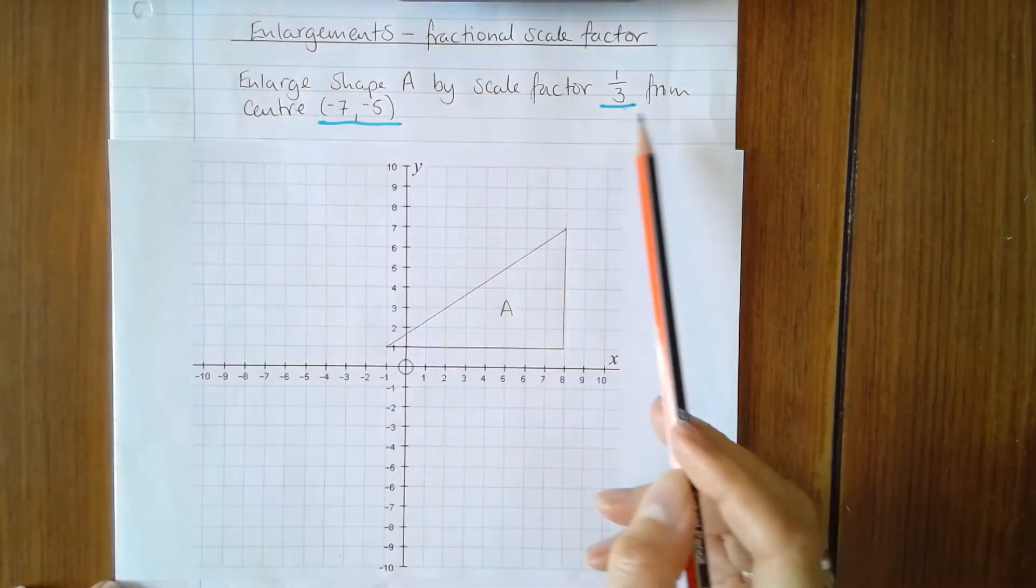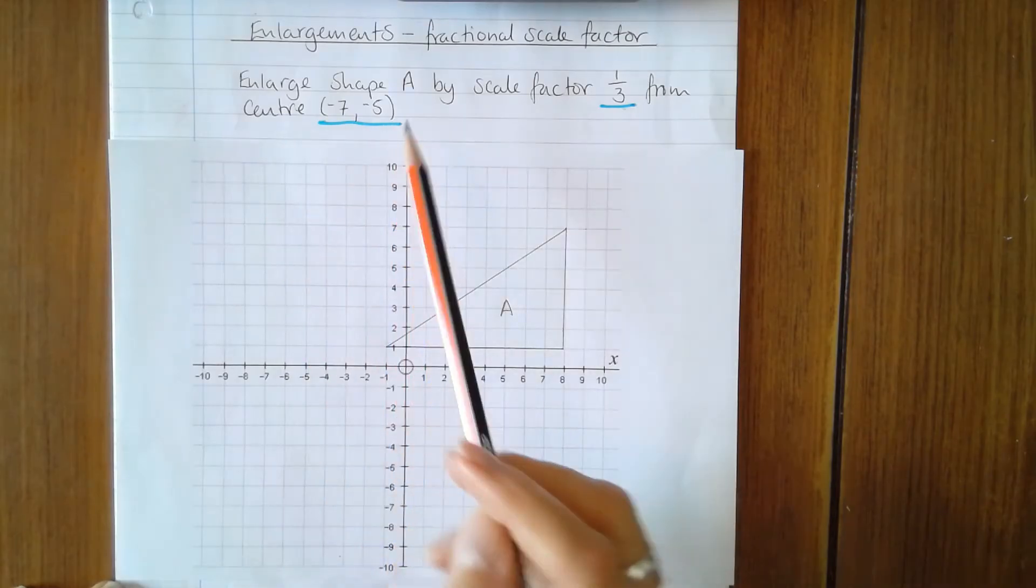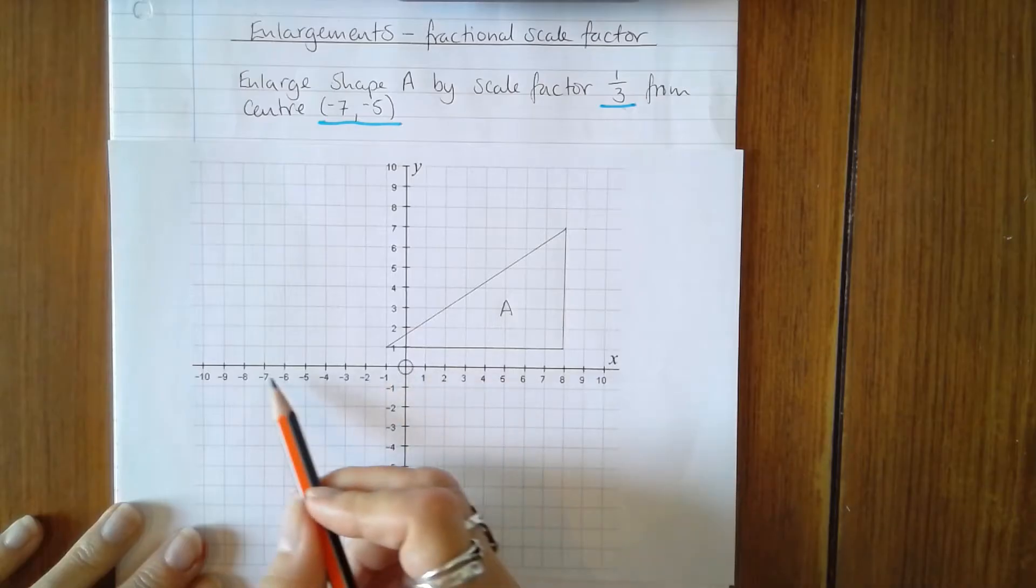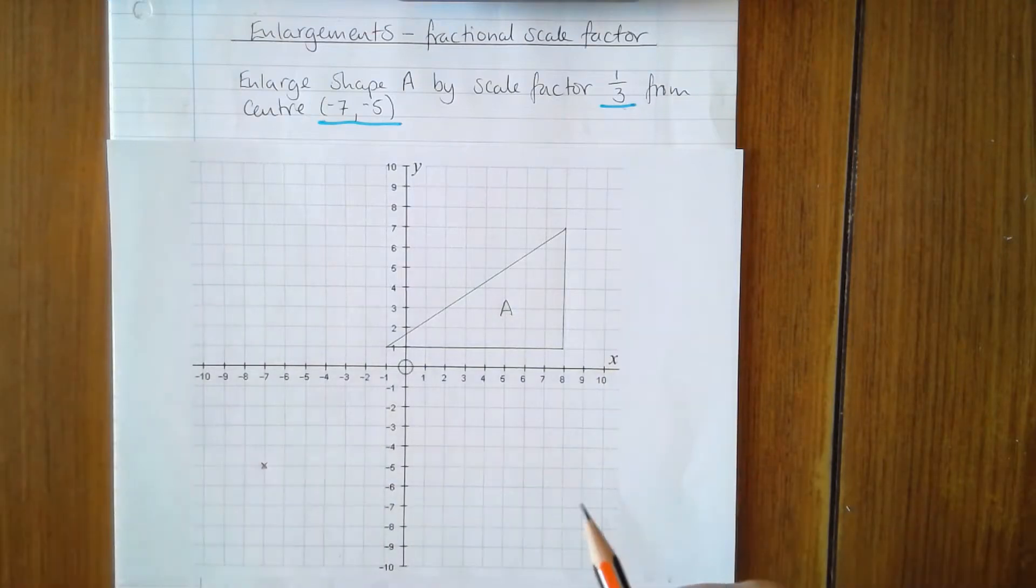Shape A by scale factor 1/3 from center (-7, -5). The first thing I'm going to do is mark on the center of enlargement at (-7, -5).